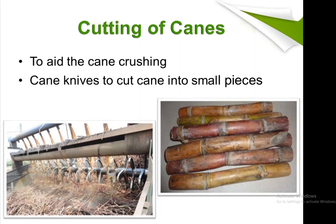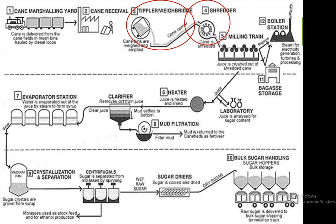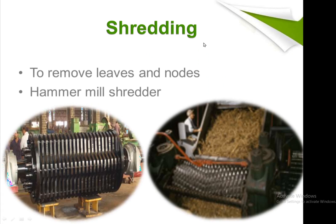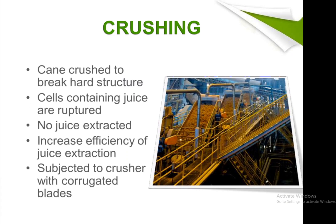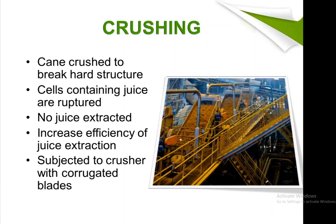After cutting, the cane is sent to a shredder for shredding. In the shredding process, leaves and nodes are removed; a hammer mill shredder can also be used. The next step is crushing, where cane is crushed to break the hard outer structure of the sugarcane. Cells containing juice are ruptured, increasing the efficiency of juice extraction, and the cane is subjected to a crusher with corrugated blades.